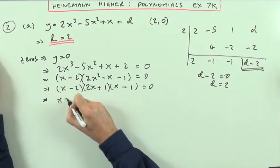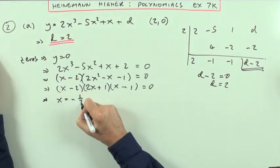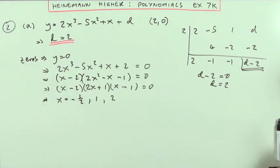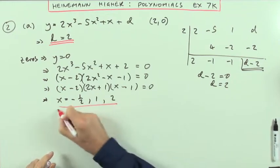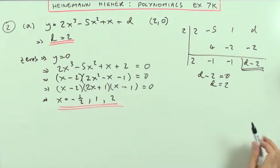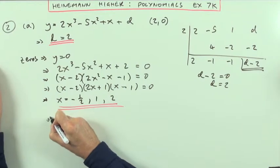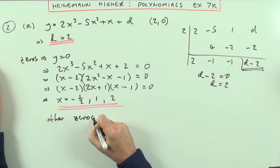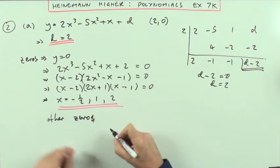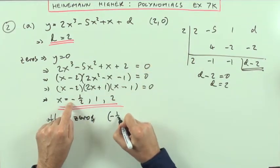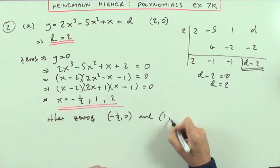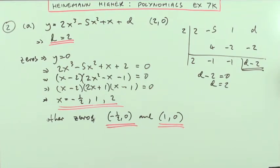So that means I've got either x equals, and I'll pick out the smallest one first, negative 1 half, or 1, or 2 for the values of x. But the question said find the other zeros. Well that means that the other zeros must be at negative 1 half, 0, and 1, 0. There, there's the other two zeros.